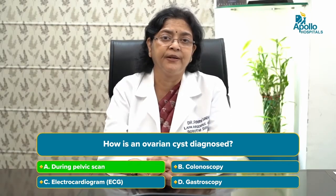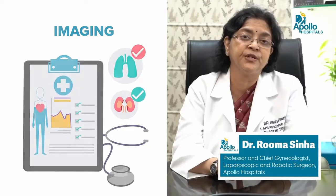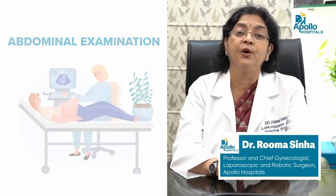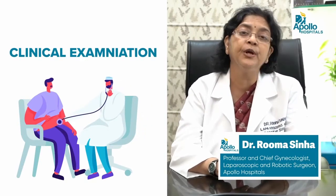Most ovarian cysts are asymptomatic, so most get diagnosed incidentally. A woman may have a dull aching pain, or a scan done for another reason reveals a cyst. It is not uncommon that women presenting with backache get an MRI or CT scan and return with a report of an ovarian cyst. Imaging is very important for diagnosis. Clinical examination — abdominal or vaginal — can detect larger cysts, but imaging remains the cornerstone. The simplest modality is ultrasound, and for smaller cysts, a transvaginal ultrasound can pick them up very early.